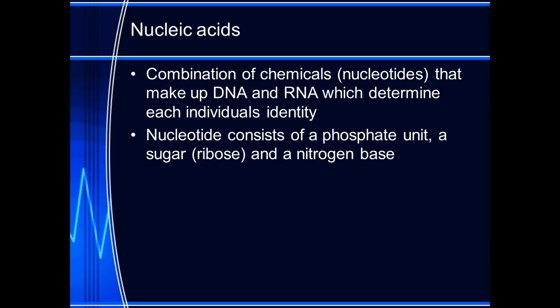Nucleic acids are a combination of chemicals that are essential for the structural formation of DNA and RNA. Nucleotides make up DNA and RNA and they determine an individual's identity. A nucleotide consists of a phosphate unit, a sugar in the form of ribose, and a nitrogen base. In your text they detail the names of the nitrogen bases. They are arranged in a certain sequence and when you get a DNA probe study done on a particular patient, what you're actually finding is how those chemicals are actually sequenced in that particular individual. Based on the sequence of those chemicals it determines who and what specifics are to that particular individual and their each and every individual cells.